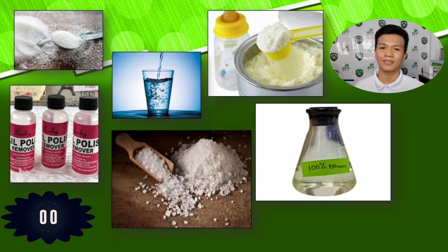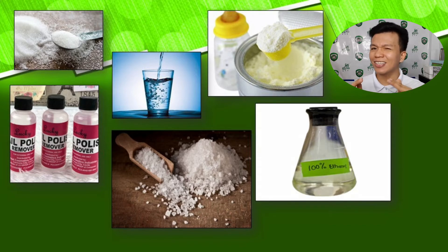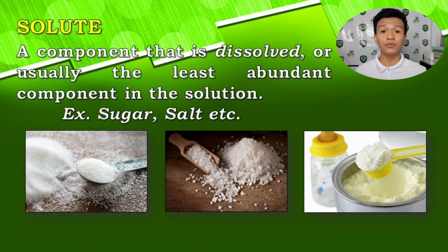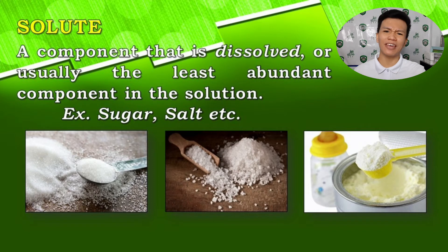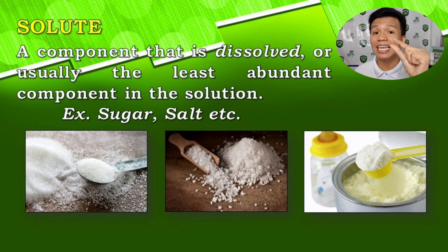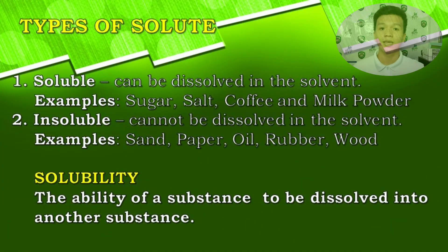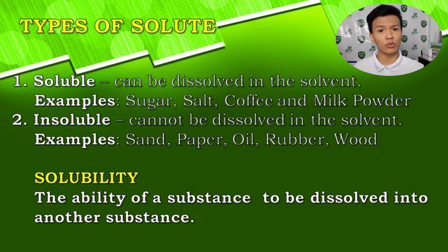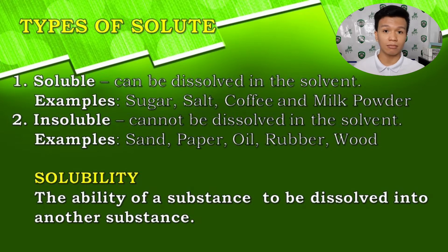Now, you can see different pictures on screen. We said a solution is composed of a solute and a solvent. I want you to identify which among these pictures are solutes and which are solvents. You have 10 seconds. The solutes in the picture are the salt, the sugar, and the powdered milk, because solutes are the materials being dissolved in a solution — the materials least abundant in it, meaning their amount is less than the solvent.